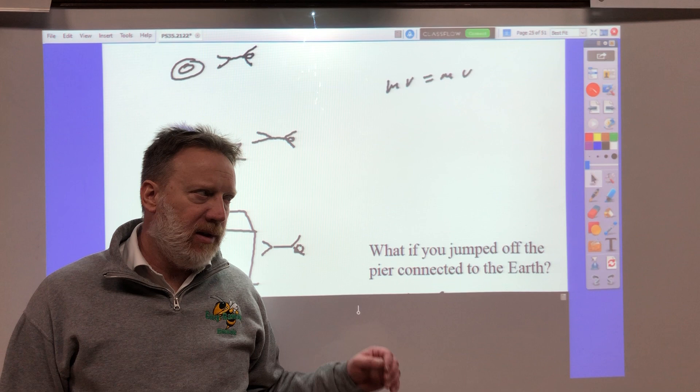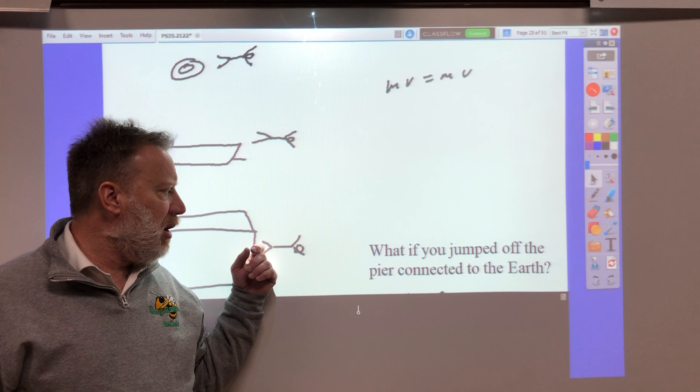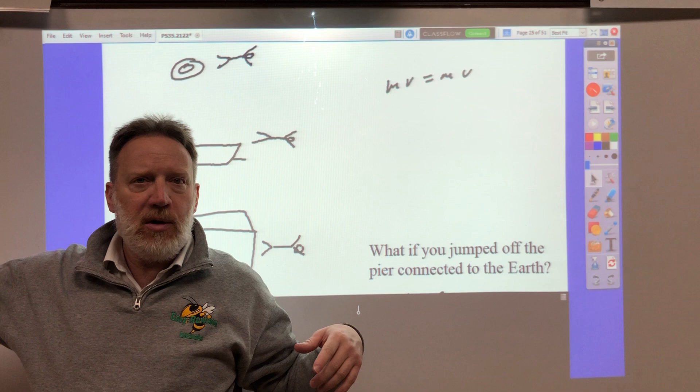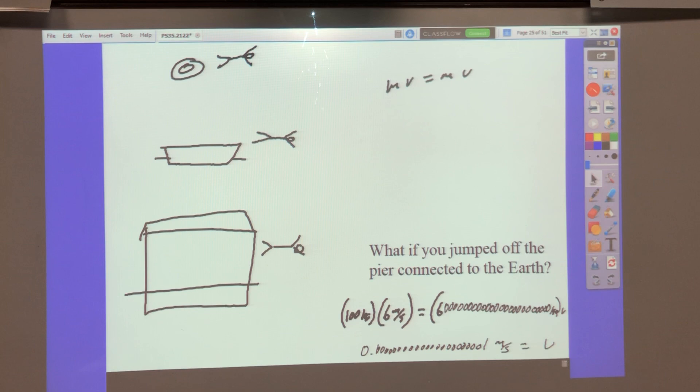But what if you went off a houseboat? If you've been swimming off a houseboat on vacation somewhere? Well, it still goes back a tiny amount, because it's real massive. And you're going to go forward farther and faster, because you're not shooting the object away.